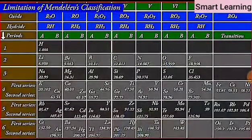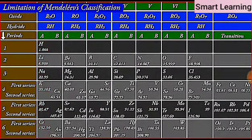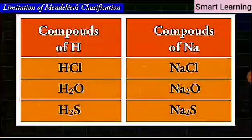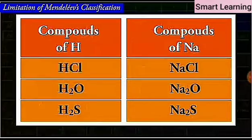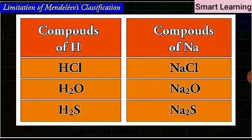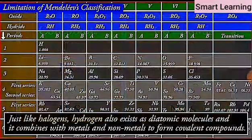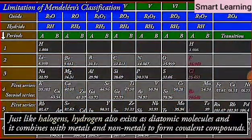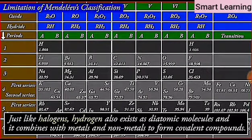Electronic configuration of hydrogen resembles that of alkali metals. Like alkali metals, hydrogen combines with halogens, oxygen and sulfur to form compounds having similar formulae as shown in the examples here. On the other hand, just like halogens, hydrogen also exists as diatomic molecules and it combines with metals and nonmetals to form covalent compounds.